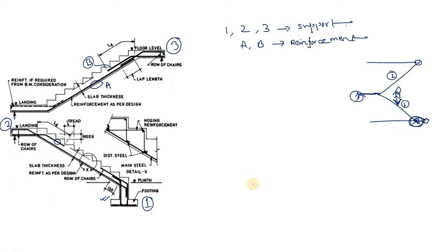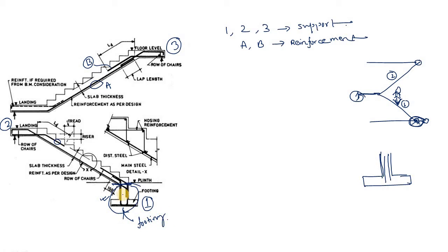To make this foundation, just like any isolated footing, you need to make a column and then a footing beneath it. Here you can see this extended part of the stair looks like a footing. The main purpose of this footing is to transfer the load from any flight down to the ground level. That covers point one. Now let's consider point one and point two — the foundation and the mid-landing — as two supports.